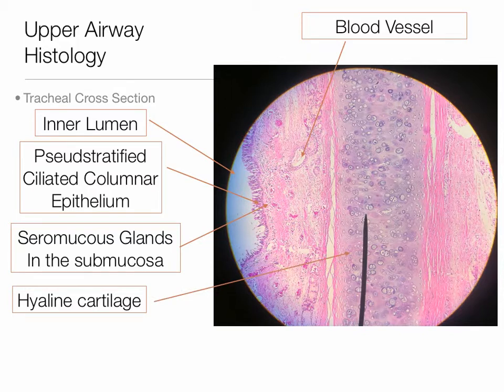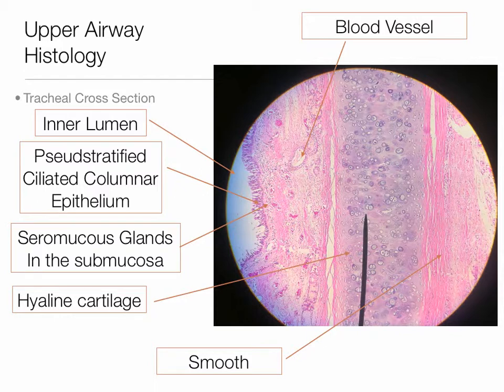Going deeper, below the submucosal layer, we have a very thick layer of hyaline cartilage. Hyaline cartilage is characteristic of what are known as our cartilaginous airways — the first several generations of our airway. So when we talk about bronchospasm, we wouldn't really see it in the upper airways because they have such a large, thick layer of hyaline cartilage. The spasm is not as much a concern here as when we get into the lower airways, where there is less cartilage and more smooth muscle. However, inflammation and mucus production can always be a problem in the upper airways. There is also a smooth muscle layer underneath the hyaline cartilage — there is a certain amount of smooth muscle even in the upper airways. That's the basic histology of the upper airway.